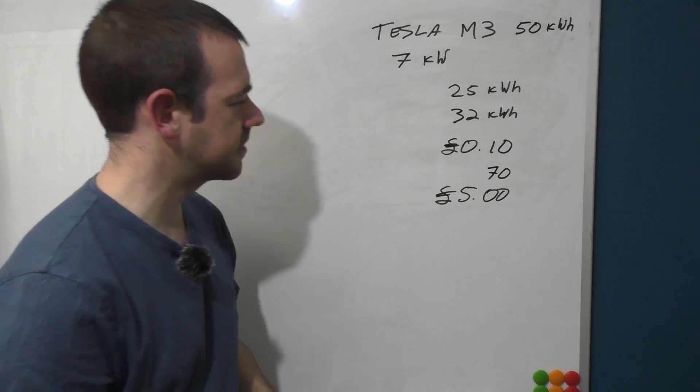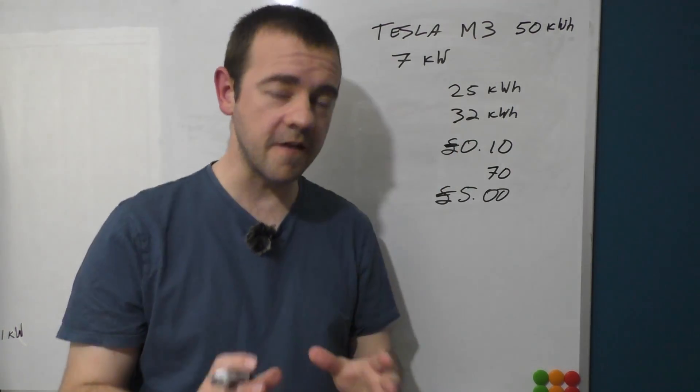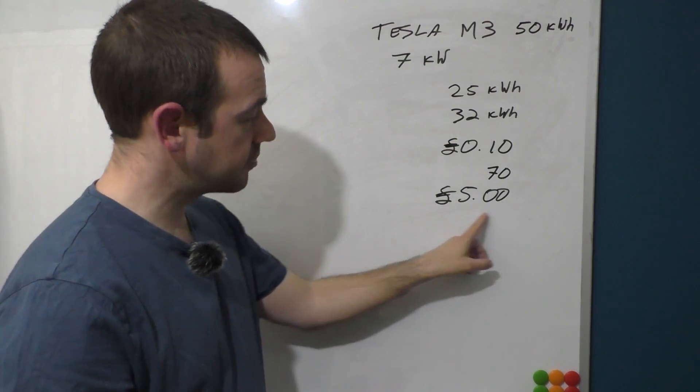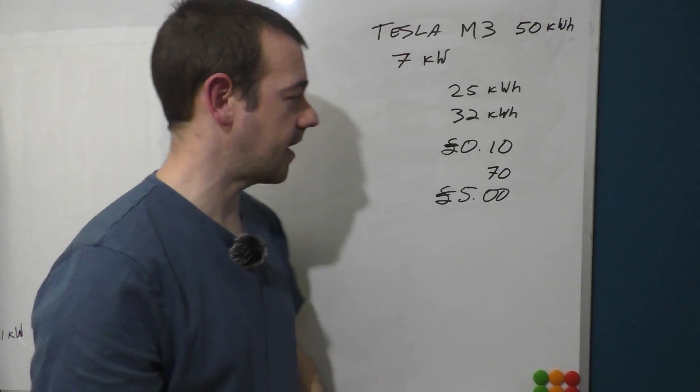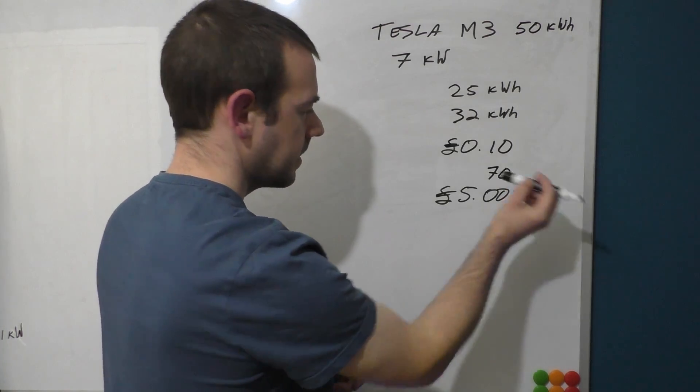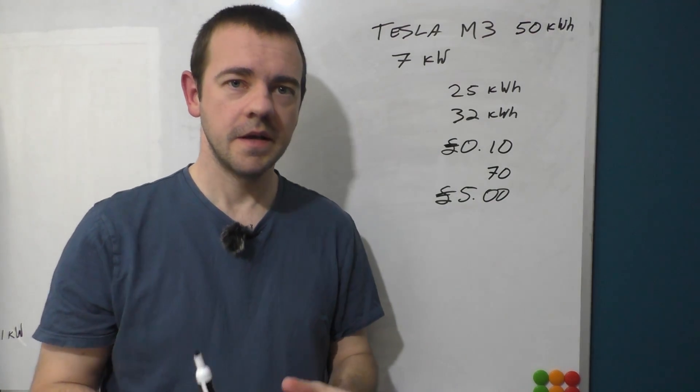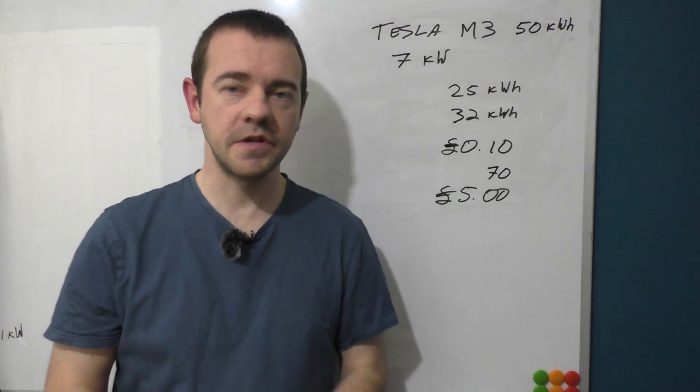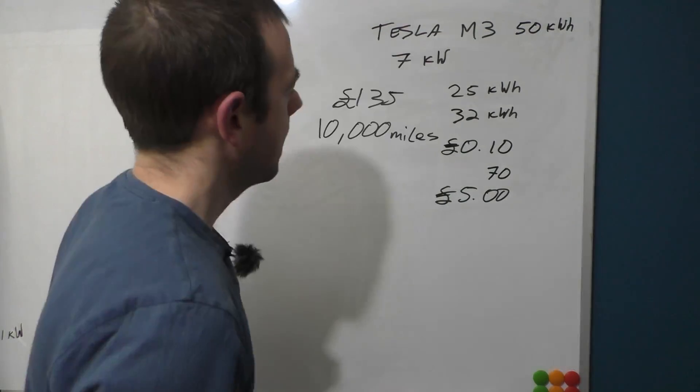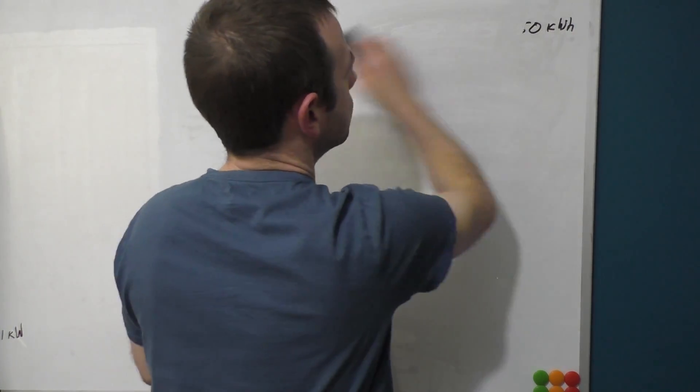So if you get on a tariff that has a rate of 5 pence at night and 10 pence during the day, then you could literally half the cost of filling your car. It would only cost two pound fifty because you're only paying 5p instead of 10. This is where a time of use tariff can be very important at making your EV run very cheaply. I've been on one for years and it saved me an absolute fortune.